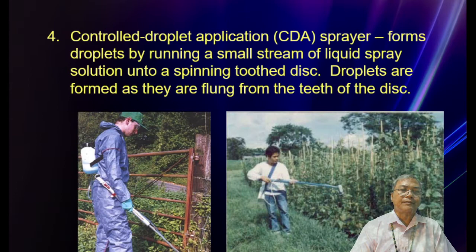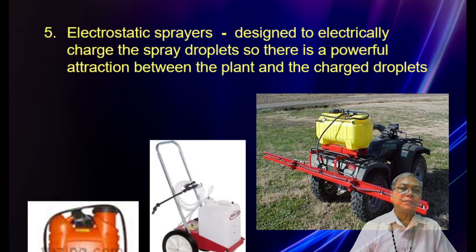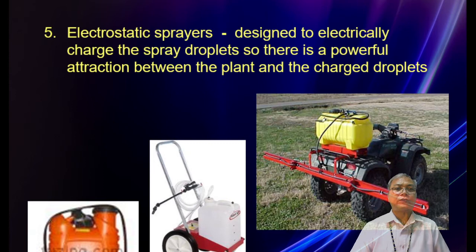Number four is the controlled droplet application (CDA) sprayer, which forms droplets by running a small stream of liquid spray solution on a spinning toothed disc. Droplets are formed as they are flung from the teeth of the disc. Number five is the electrostatic sprayer, designed to electrically charge the spray droplets, creating a powerful attraction between the plant and the charged droplets so the spray adheres to the plant.